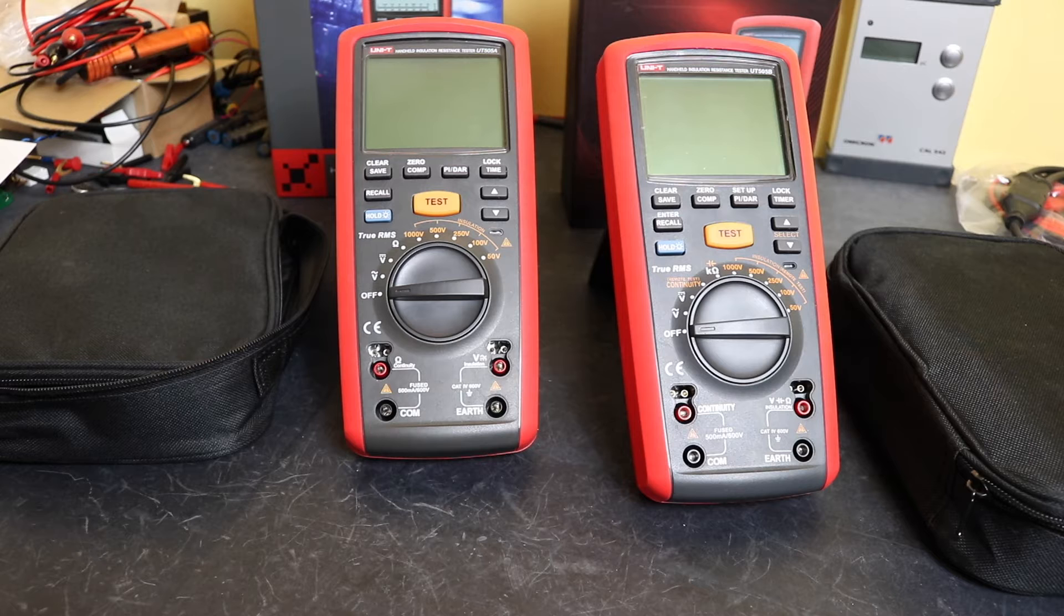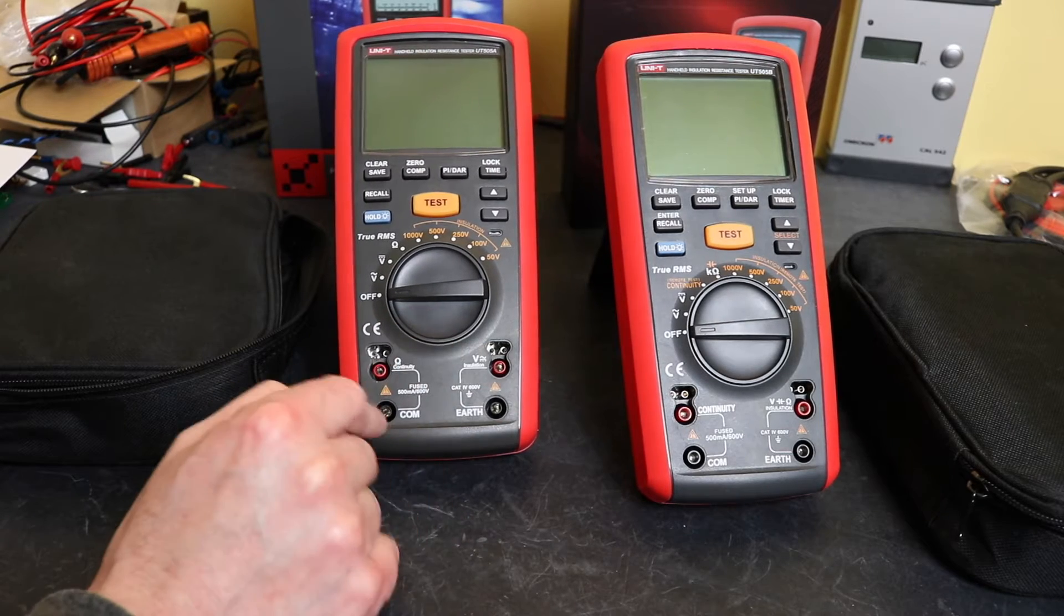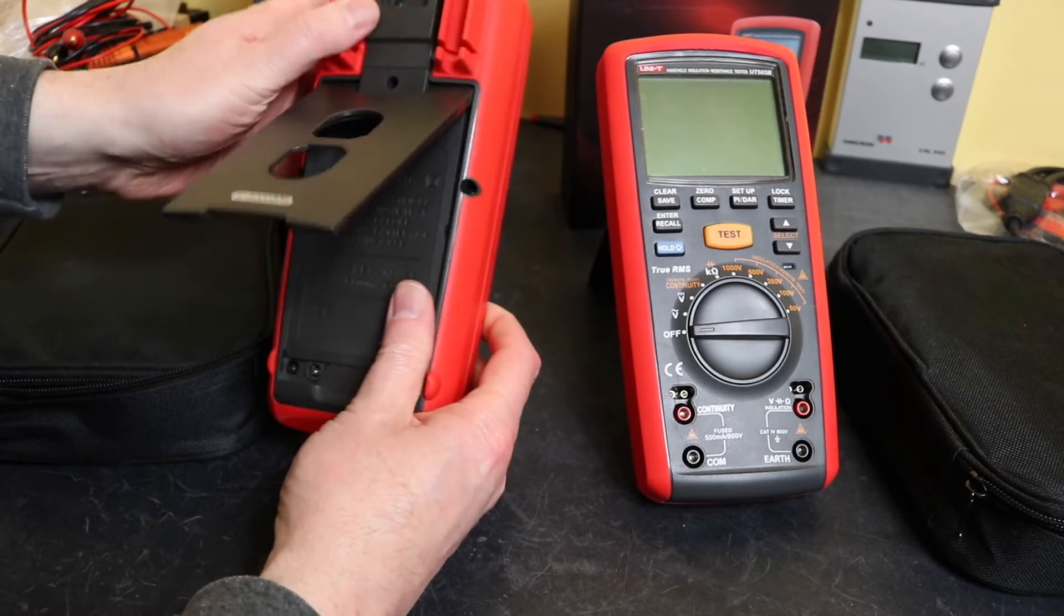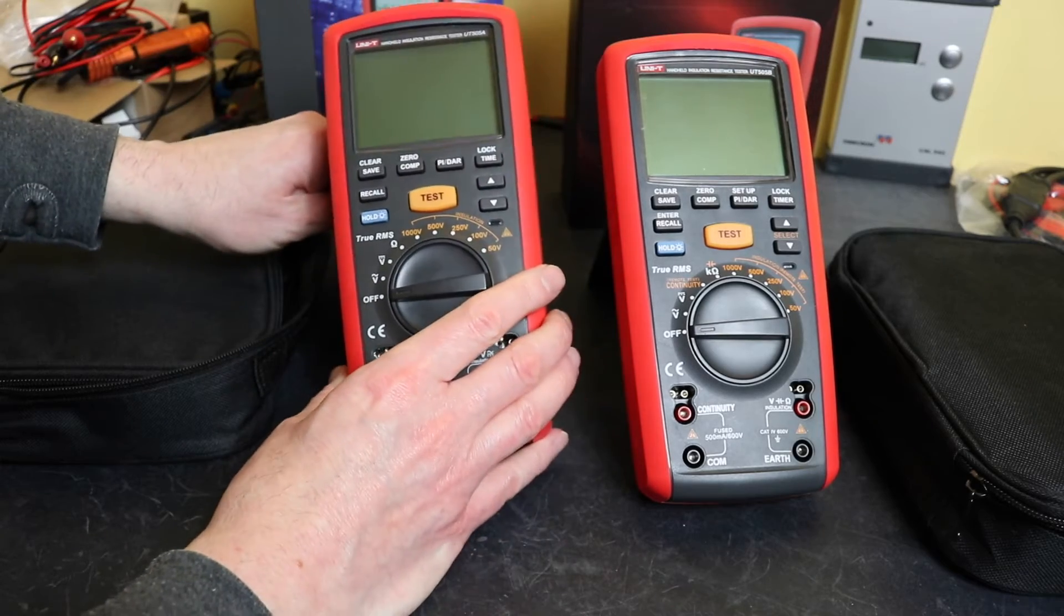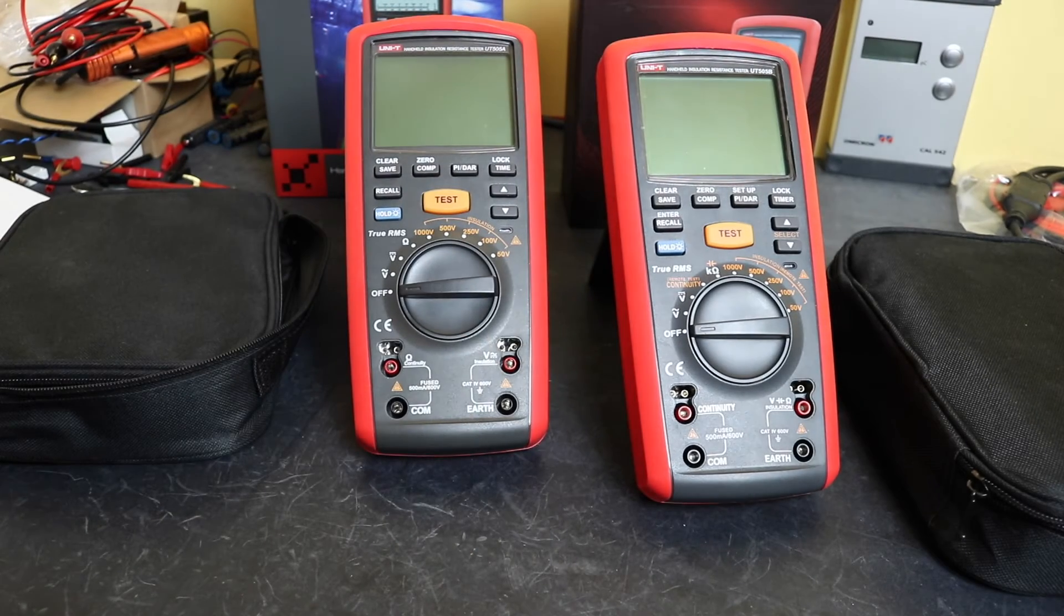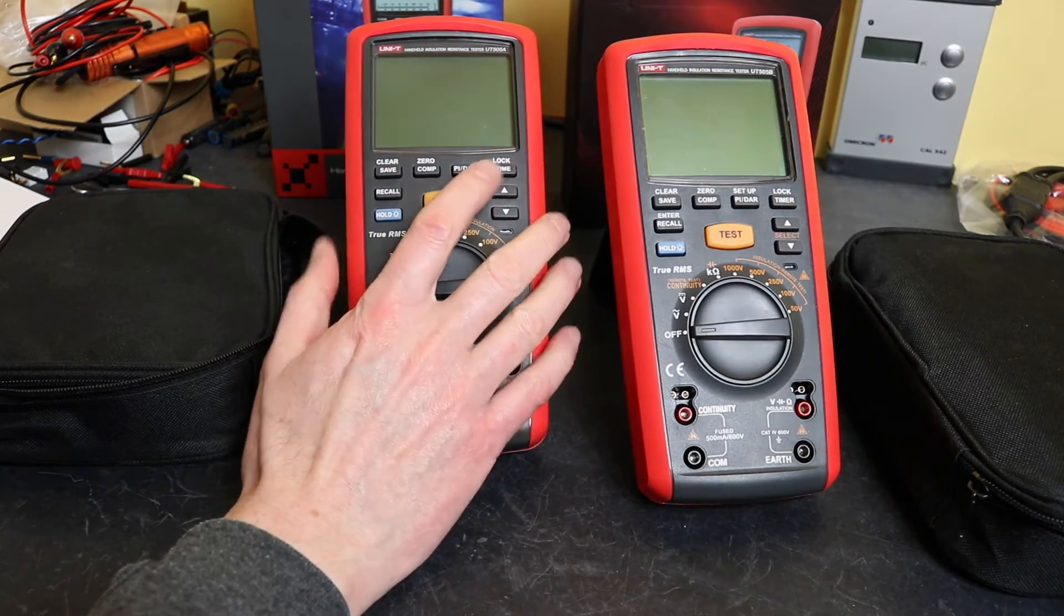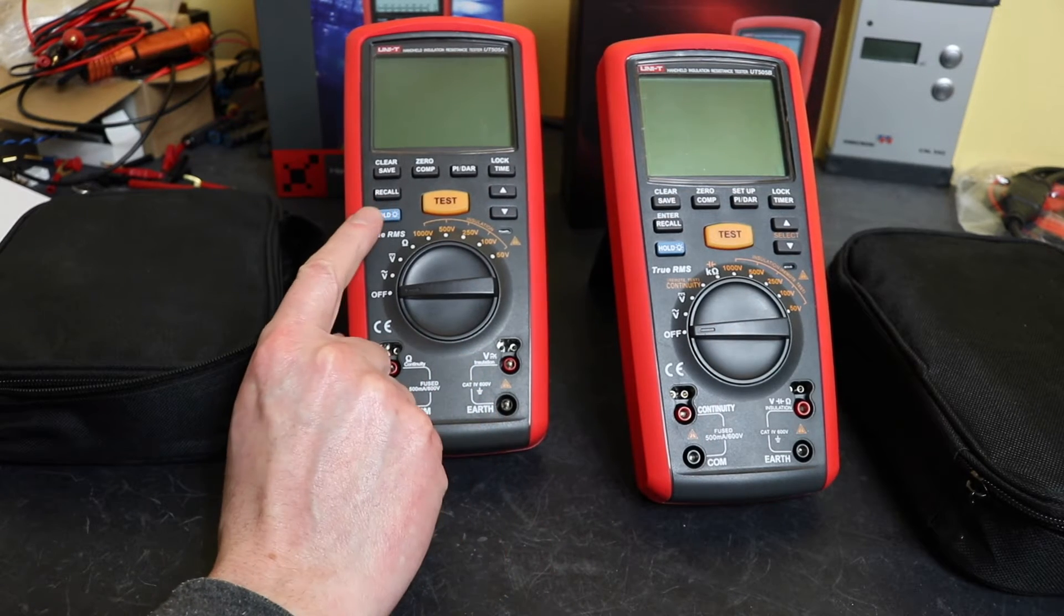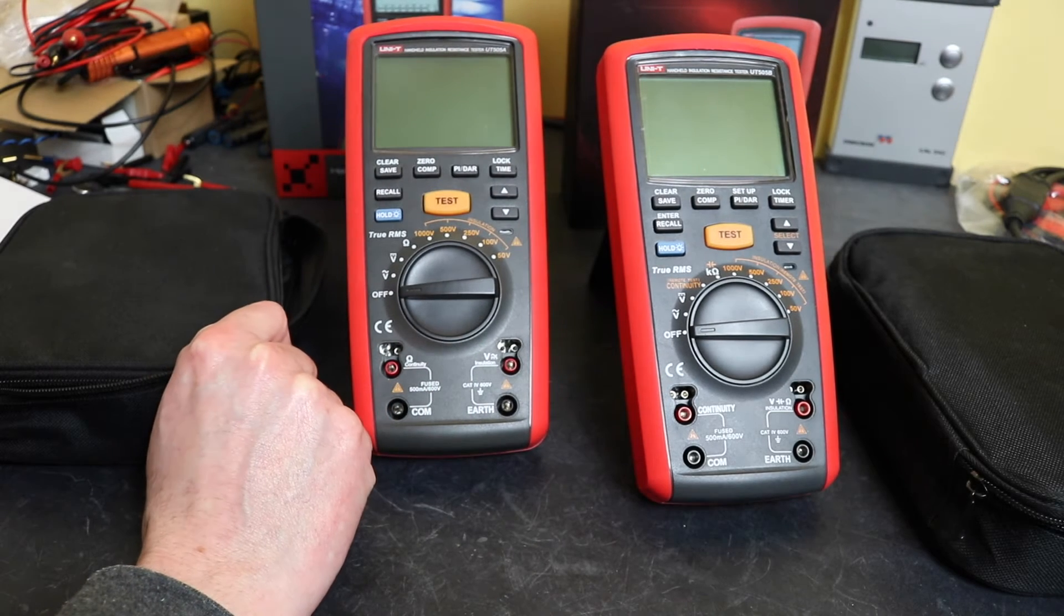As you can see, the two meters are pretty much identical from a physical point of view. They have the same layout of buttons and rotary selection switch, same jacks down at the bottom there. The meters themselves are the same - same stand, same rubber holders for the test probes. The only way you can see from looking at the two instruments from the front is there's a slight difference between some of these buttons and the functionalities. You see the setup there and a select function on this one, and this one has an enter button for the setup that you don't see on the front of the UT505A there.